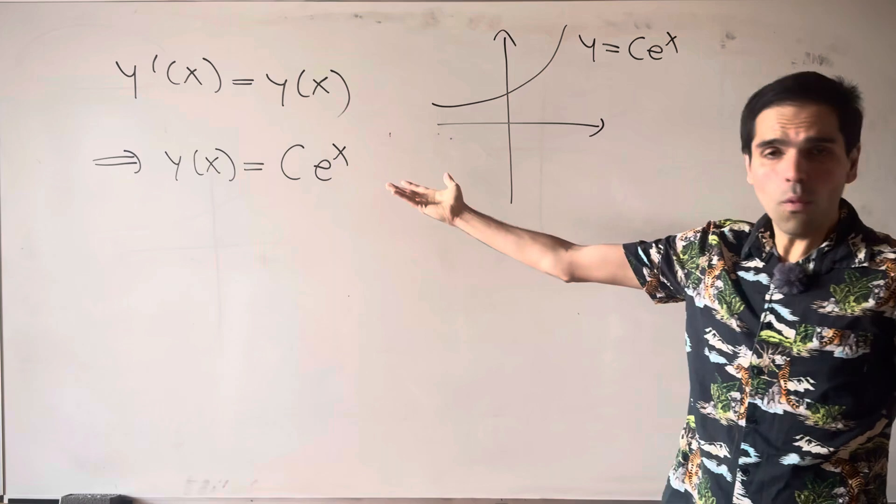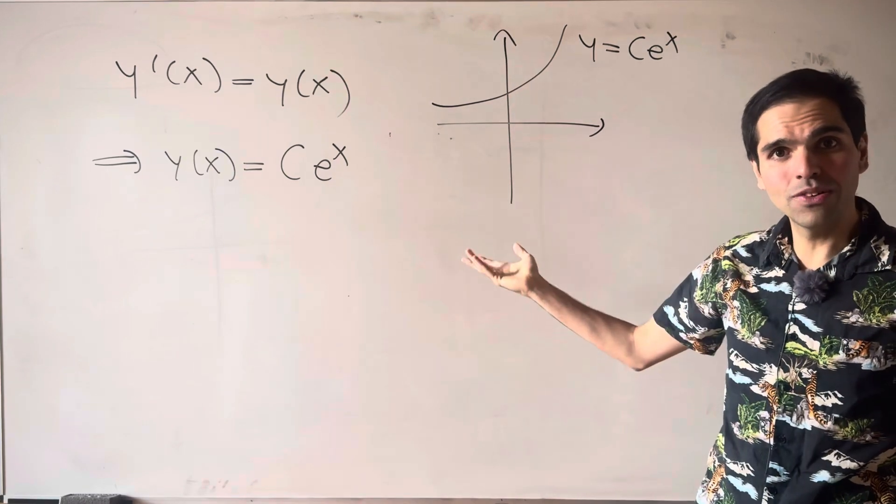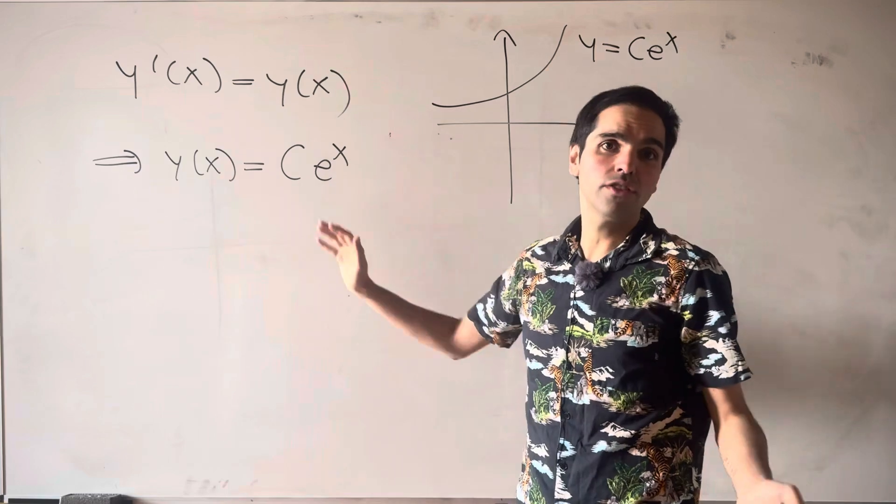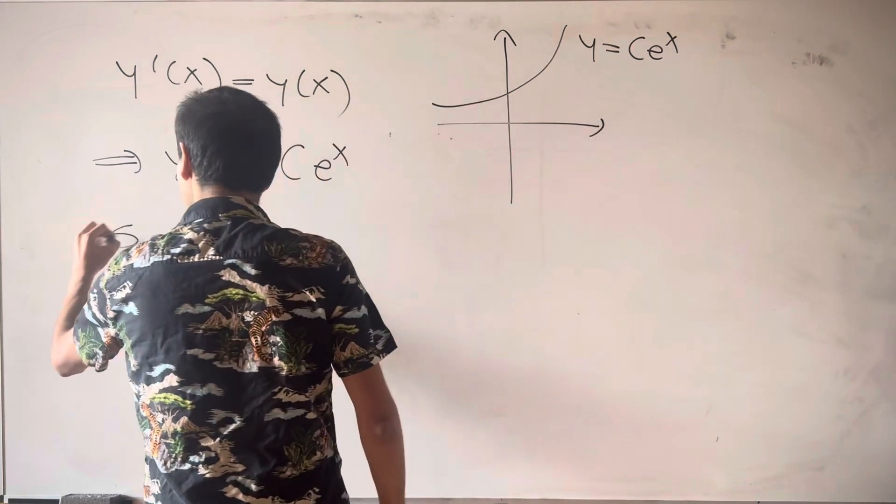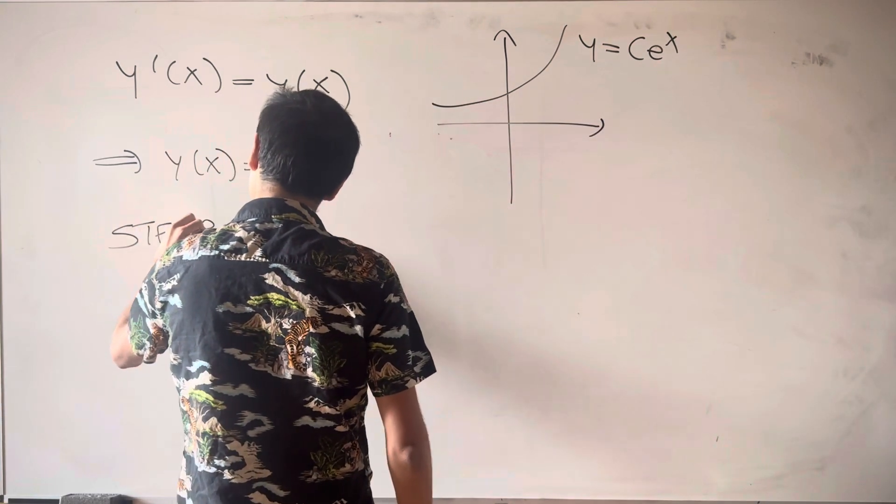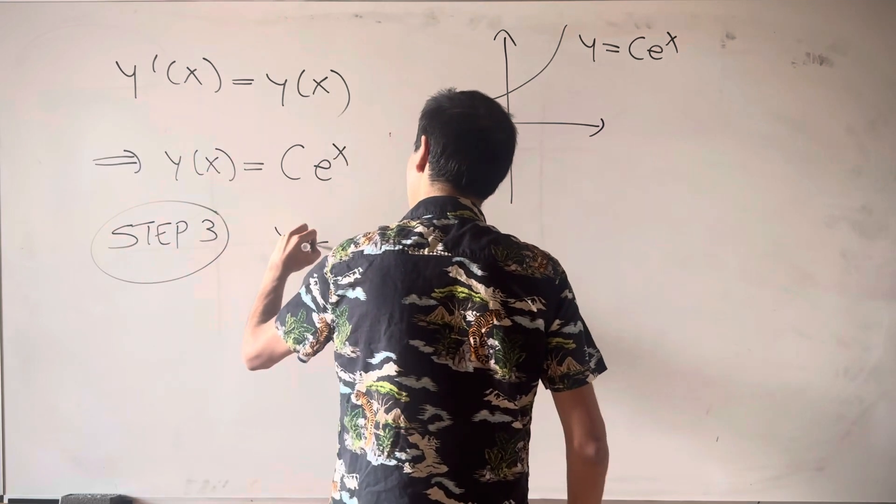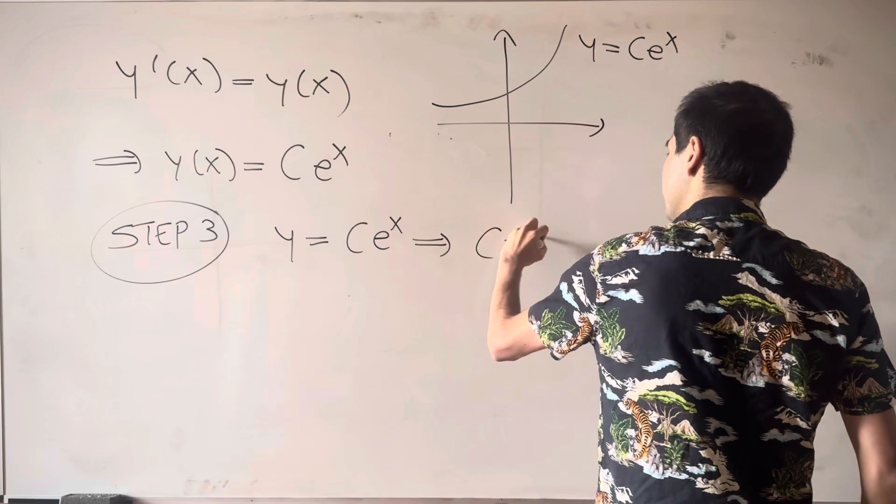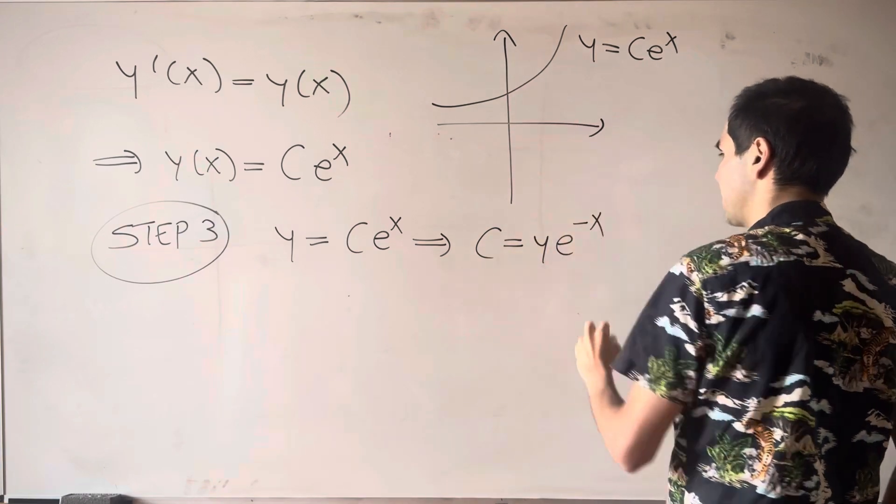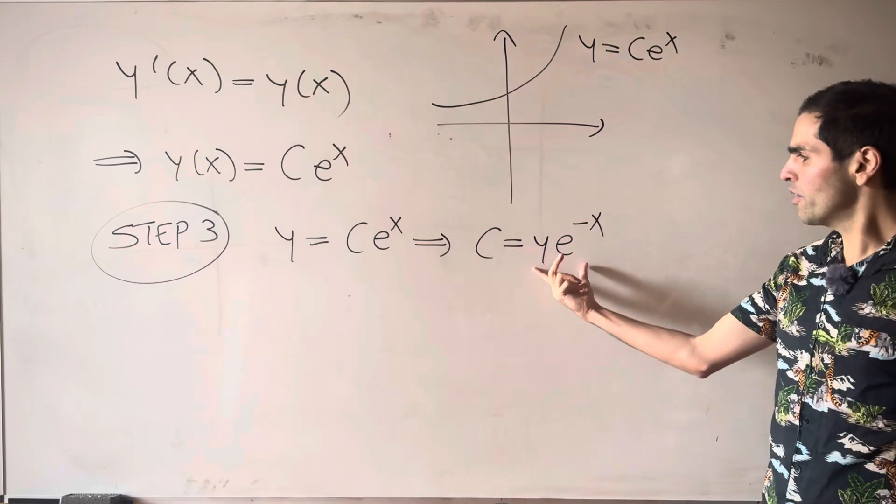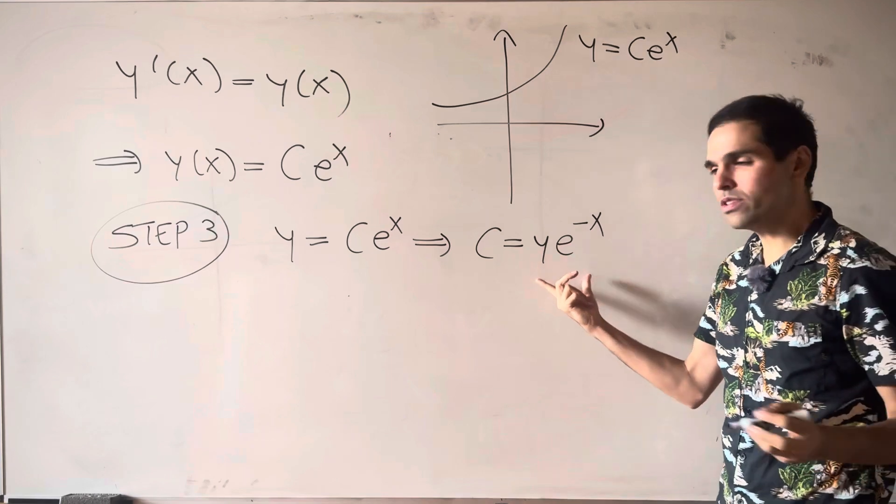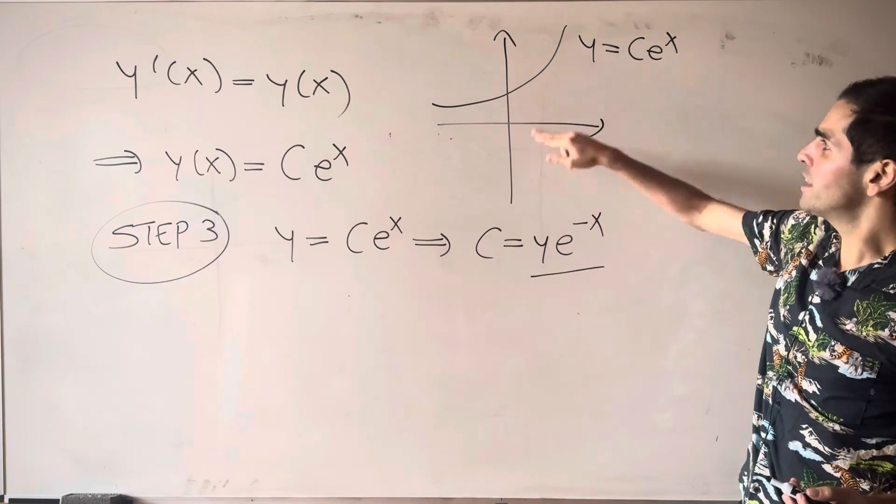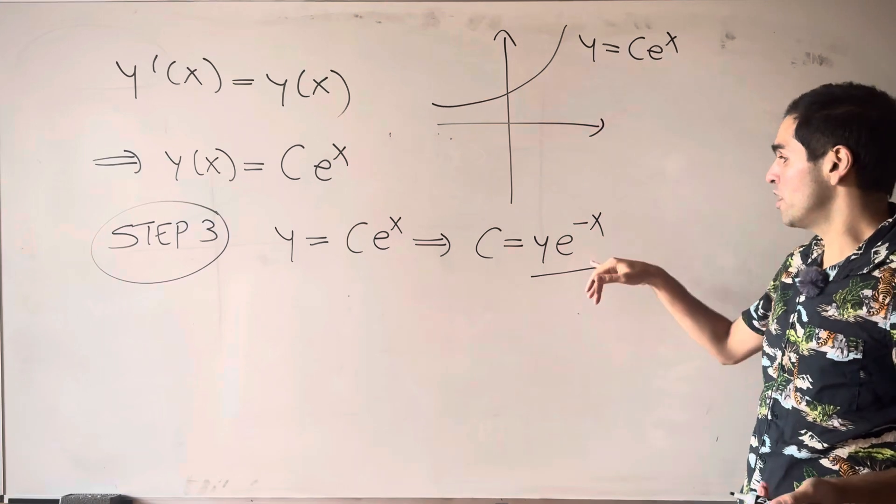And then, once again, what we want to do next is to find some variable that tells you which curve we're on. So is that great? Well, if y is C e to the x, that means that C is y e to the minus x. So in other words, the variable we want to use here is y e to the minus x, because it tells you precisely what curve we're on.